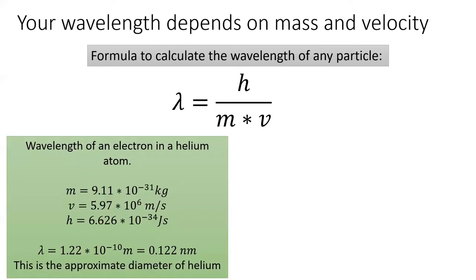An electron in a helium atom weighs a tiny, tiny amount, about 9 times 10 to the negative 31st kilograms. And it travels quite quickly at about 6 million meters per second. Plugging these values into the equation, we see that an electron in helium has a wavelength of 0.1 nanometers, which is more or less the approximate size of the helium atom that it lives in. This wavelength sets the uncertainty of the electron's location. It's nearly impossible to know exactly where inside the helium atom that electron is at any given moment.